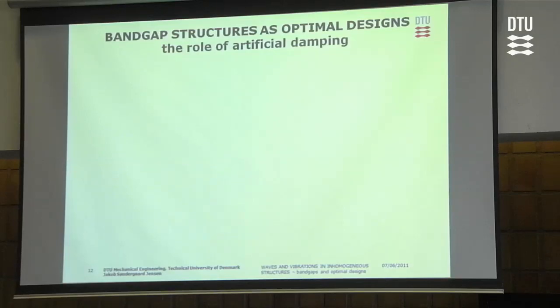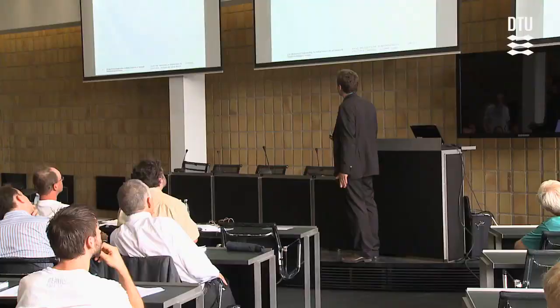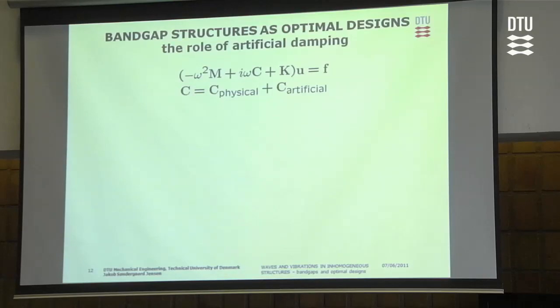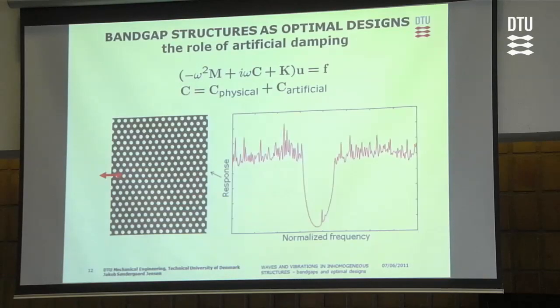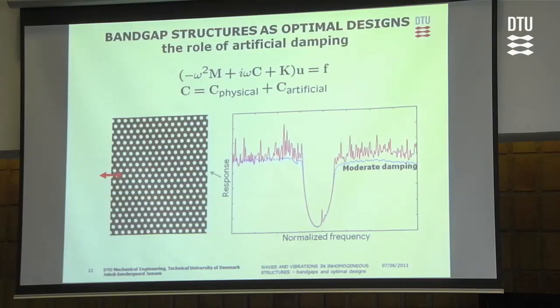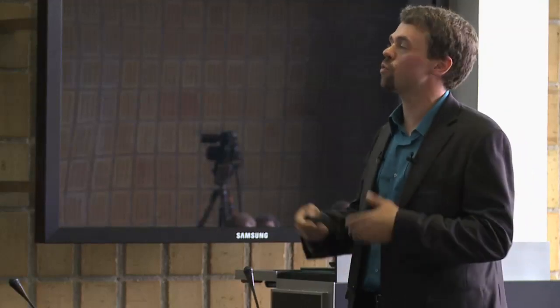A specific effect found very useful was the role of including artificial damping in the optimization procedure. The undamped response of a periodic structure shows many structural resonances, which causes the optimization problem to have many local minima. By adding moderate or strong artificial damping, we eliminate these local structural resonances and thereby remove unwanted local minima — while still preserving the same behavior in the band gap frequency range. This was very useful for creating optimized designs.